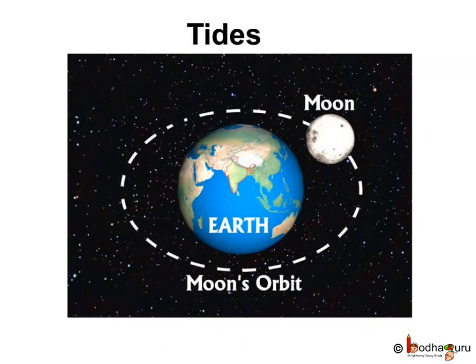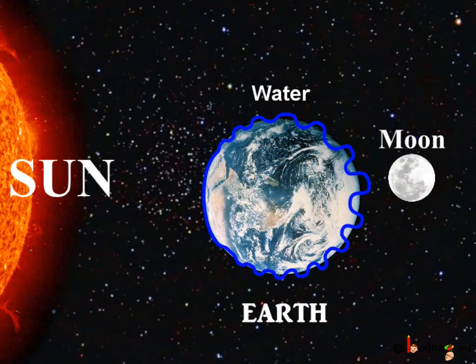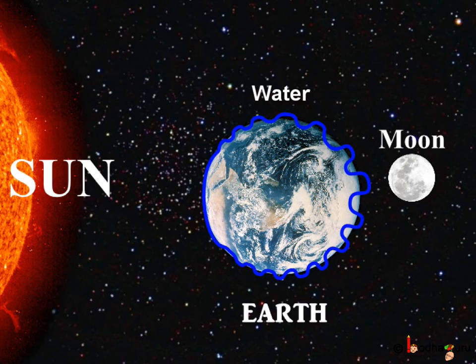As we know, the moon revolves around the earth. Just like there is a gravitational force on the earth that keeps all of us attracted towards the center of the earth, there is a gravitational force of the moon that pulls the earth's objects, like water in this case, towards the moon. And this gravitational force of the moon gives tides in the ocean and sea on the earth.